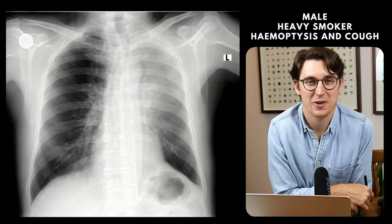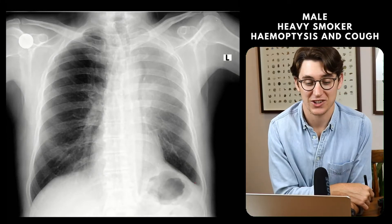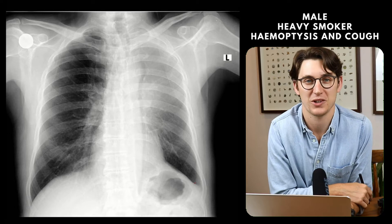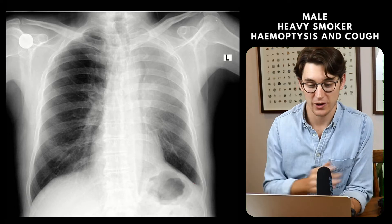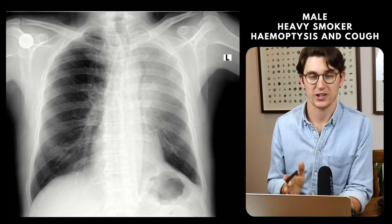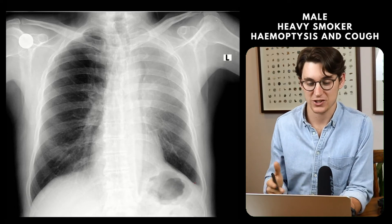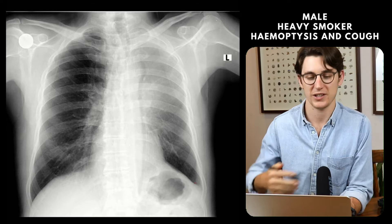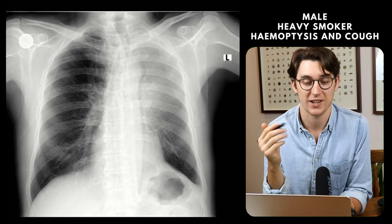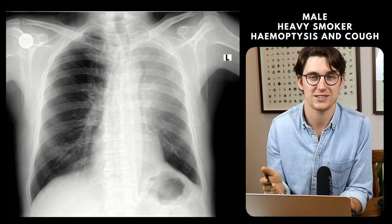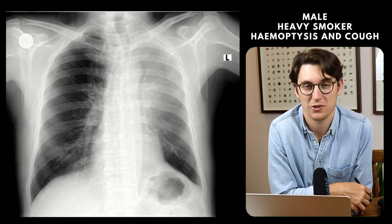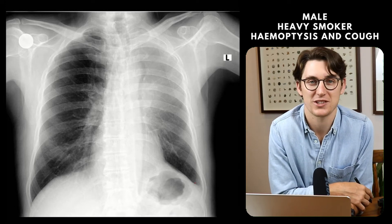Let's get into another Viva practice case. Today we're going to be using this chest radiograph as our example image. Go ahead, have a look at the x-ray, list the features that you see, and come up with a nice summary that leads you towards a diagnosis or at least a list of differential diagnoses. Then I'm going to share with you how I would approach this case in an exam setting.